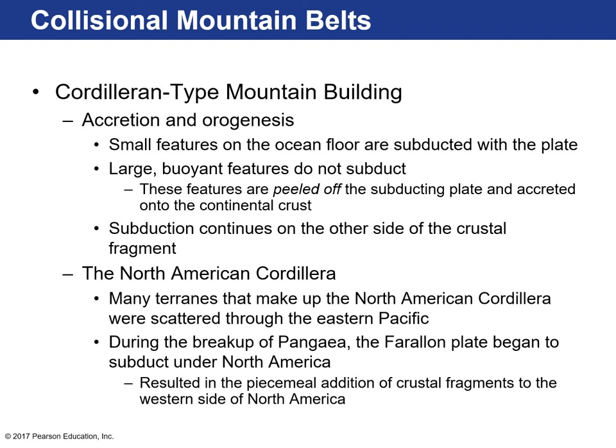We refer to this as accretion and orogenesis — not only are you accreting new terrains to the continent, but because it's a convergent plate boundary, you're also building mountains with a lot of compression pushing rocks upward. Those large, buoyant features on the ocean lithosphere don't subduct — they peel off the subducting plate onto the continental crust, and then subduction continues. Many of the terrains that make up the Northern Cordillera were scattered terrains on former ocean plates in today's Pacific. Going back to the breakup of Pangaea, the Farallon plate — a small sliver of which still exists in the Pacific Northwest — essentially resulted in the piecemeal addition of crustal fragments.